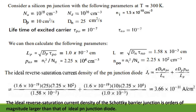For calculating the ideal reverse saturation current density of the P-N junction diode, consider a silicon P-N junction diode with the following parameters: NA = 10¹⁸ cm⁻³, ND = 10¹⁶ cm⁻³, ni = 1.5 × 10¹⁰ cm⁻³, DP = 10 cm²/s, DN = 25 cm²/s, and minority carrier lifetimes τpo = τno = 10⁻⁷ s.